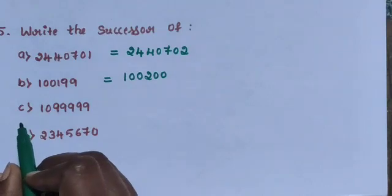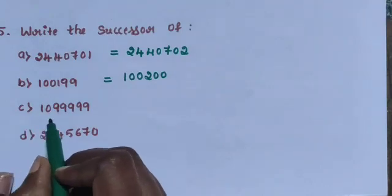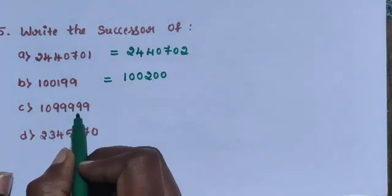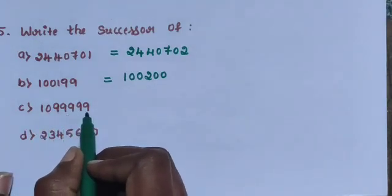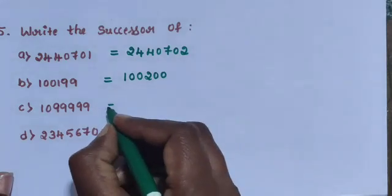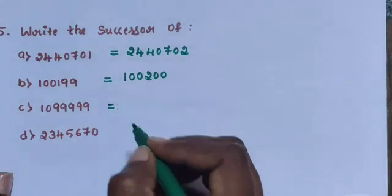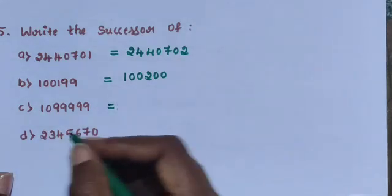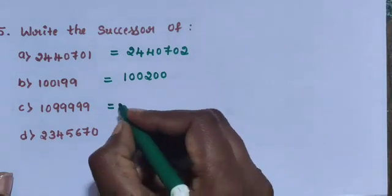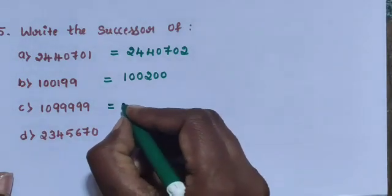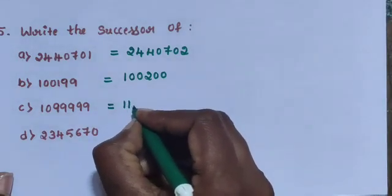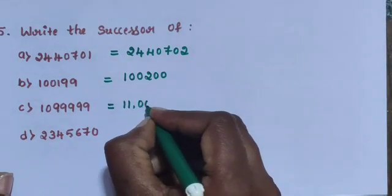Sub-question C: 10,199,999. The successor number, meaning the next number, is 11,00,000.